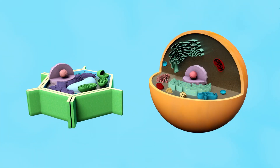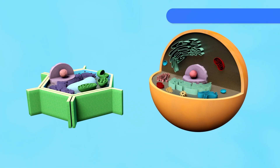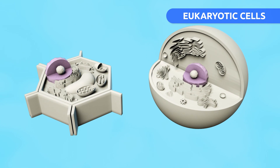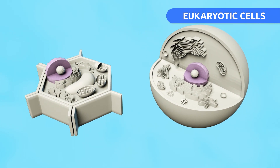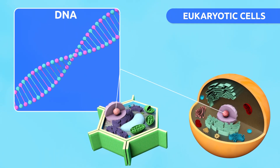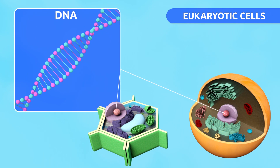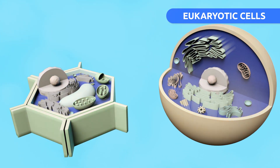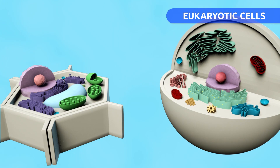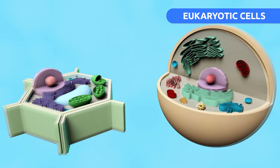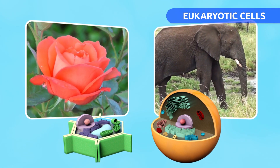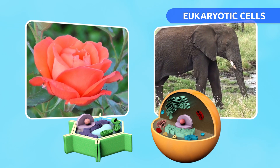The main characteristic of eukaryotic cells is that their nucleus is protected by a membrane. DNA is found inside eukaryotic cells, which contain genetic material. Organelles are found in the cytoplasm of eukaryotic cells. Eukaryotic cells can be plant cells or animal cells.